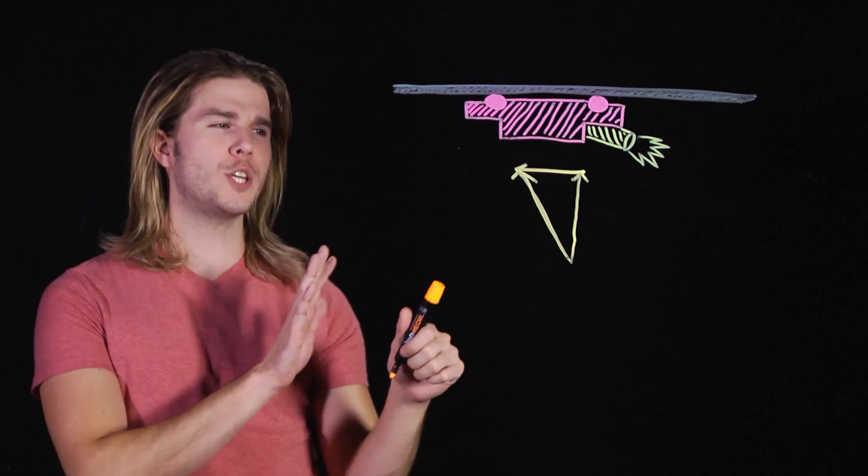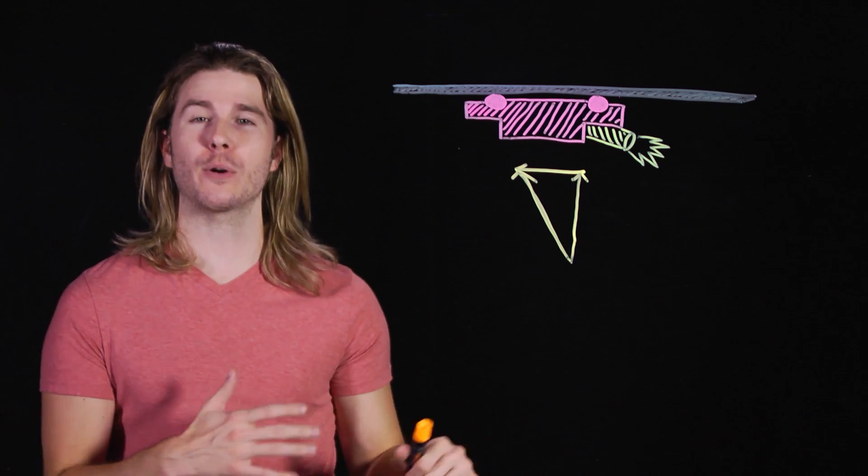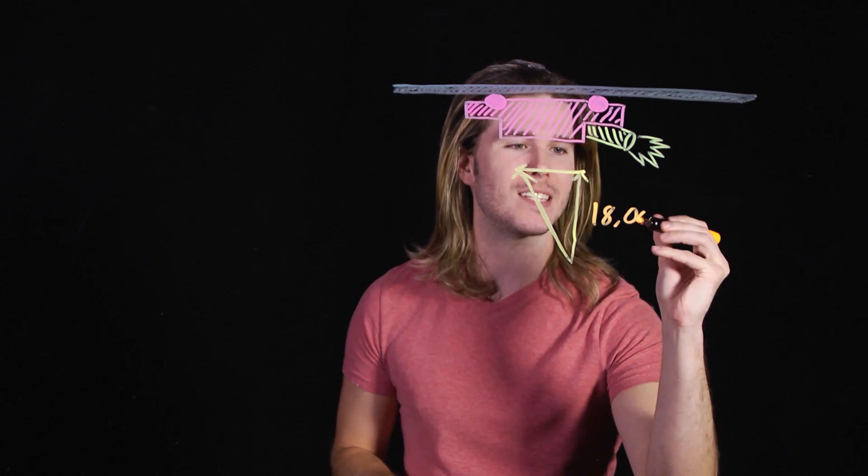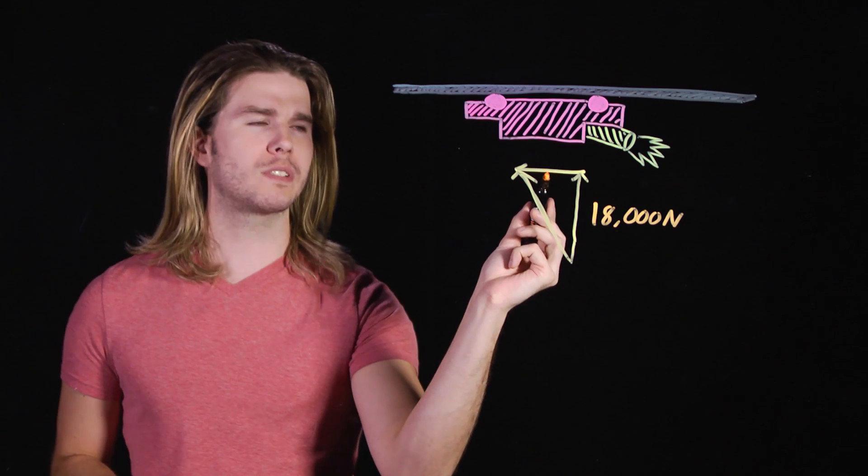Now the second step, math. We already know what the vertical component of this thrust is going to be. It has to at least cancel out the weight of the car. So this is going to be our 18,000 Newtons. But what about the horizontal direction?